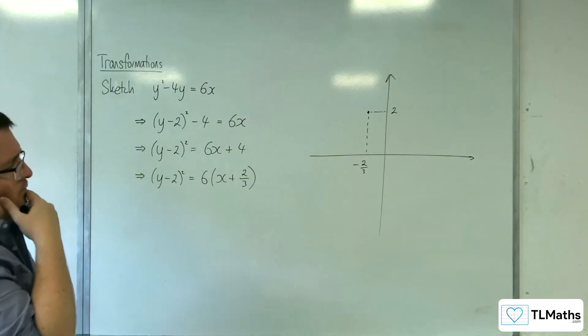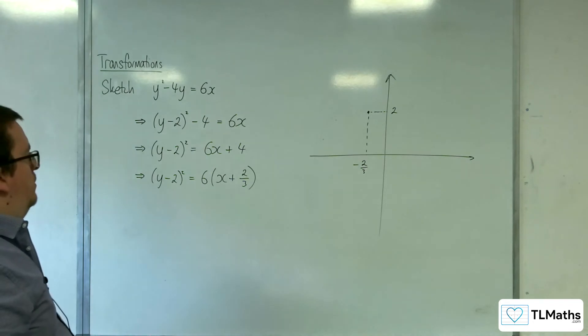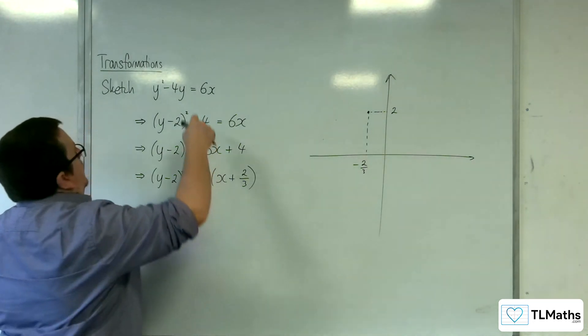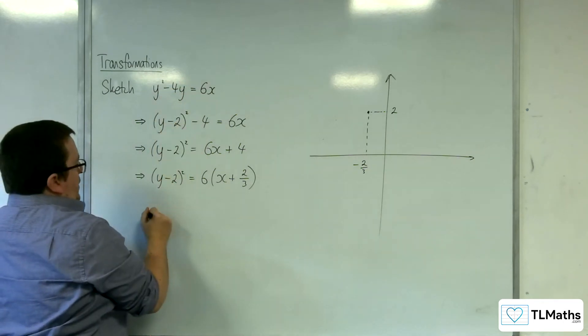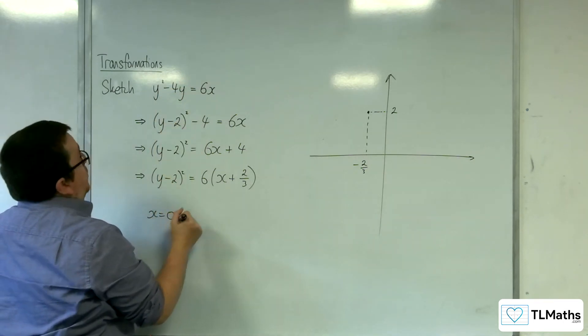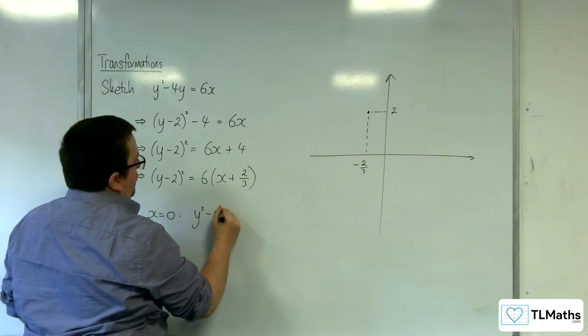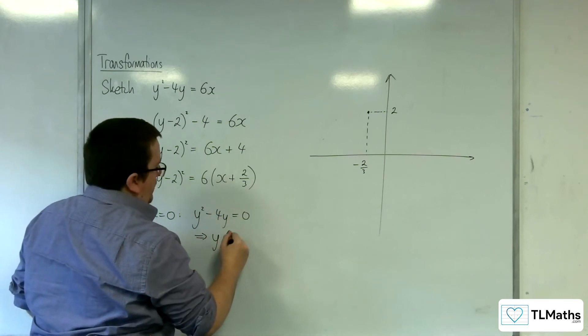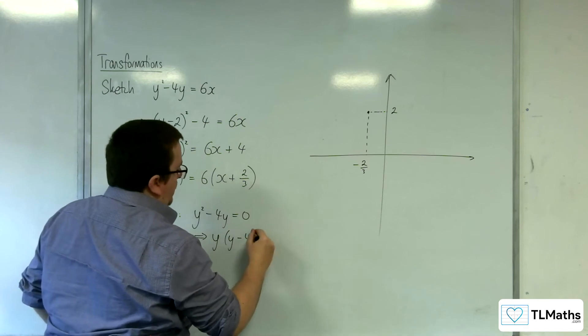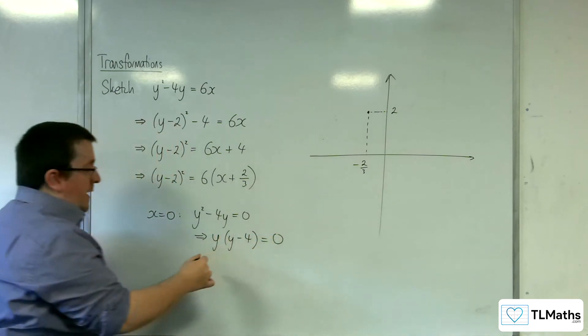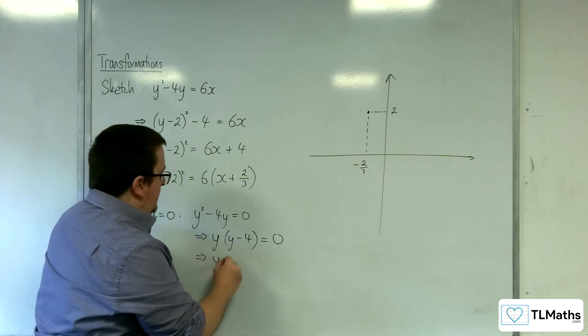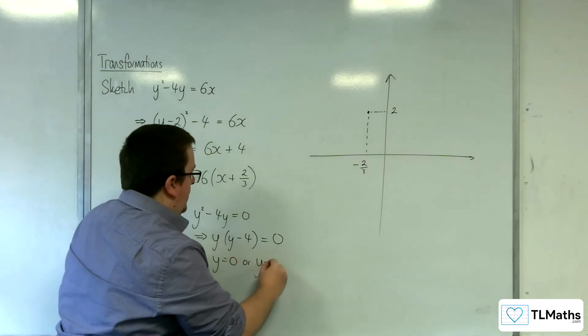So I'm going to substitute in x equals 0 to work out what's going on there. So if I substitute in x equals 0 into the original equation, we're going to have y squared take away 4y equals 0. So factorising that, we'd have y times y take away 4 equals 0. So either y is 0 or y is equal to 4.